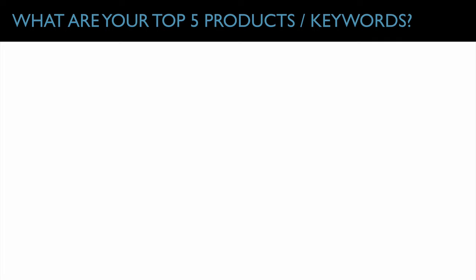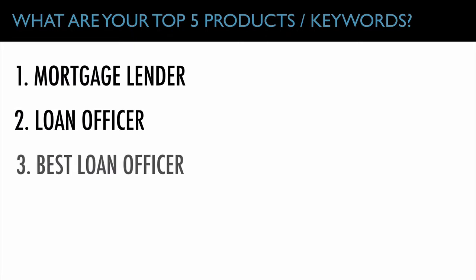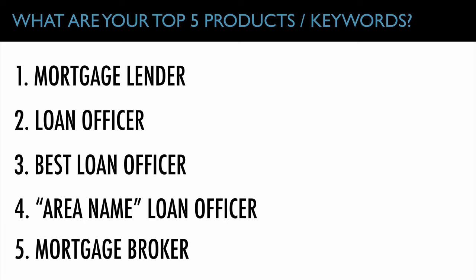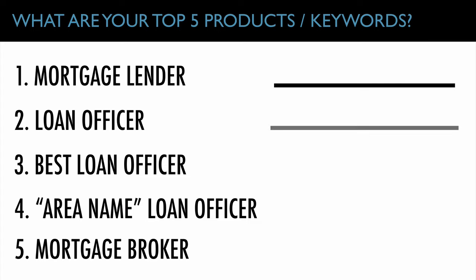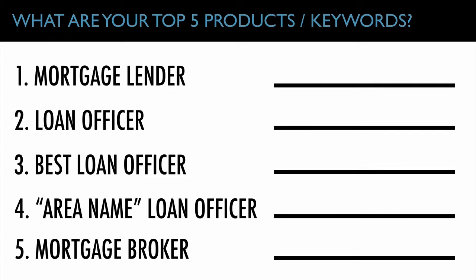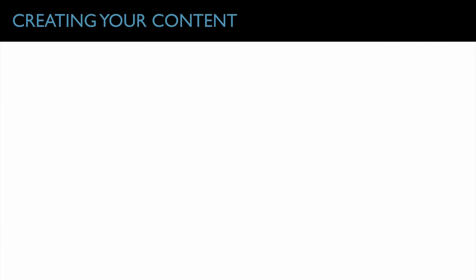A very simple way to do keyword research — write down your top five products, keywords, or loan types you want in the marketplace. So: mortgage lender, loan officer, best loan officer, area name loan officer, area name mortgage broker — those are the main key phrases people will search when they're ready to buy right now. Just write down your top five products and keywords in your marketplace and those essentially become your top five keywords. I'm also going to show you a cool reverse-engineering strategy that will show you what buying phrases are actually happening in your marketplace.